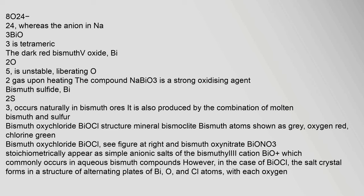The dark red bismuth(V) oxide, Bi₂O₅, is unstable, liberating O₂ gas upon heating. The compound NaBiO₃ is a strong oxidizing agent. Bismuth sulfide, Bi₂S₃, occurs naturally in bismuth ores and is also produced by the combination of molten bismuth and sulfur.